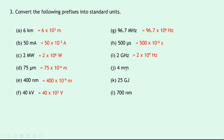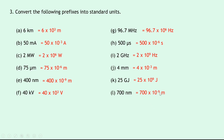Part j: 4 millimeters — replacing milli with times 10 to the power of minus 3 gives 4 times 10 to the minus 3 meters. Part k: 25 gigajoules — giga is times 10 to the 9, so we get 25 times 10 to the 9 joules. And lastly, 700 nanometers becomes 700 times 10 to the minus 9 meters.